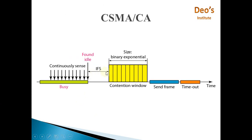Once the interframe space time is over, the station checks the channel again — this time continuously checking across the contention window. The contention window has different time slots; after each time slot, if the channel is idle, the station continues. If the channel is busy, it waits for the next time slot and checks again. Once the contention window is over and the channel is idle, the station sends the frame and waits for an acknowledgement. This is how collision avoidance is achieved.